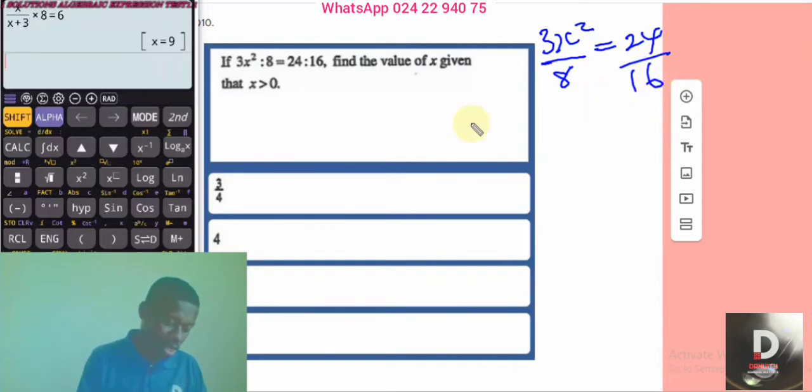Let's fill it in our calculator. The first term is fraction. 3x² over 8, equal to what do I have? 24 over 16. 24, fraction 16.